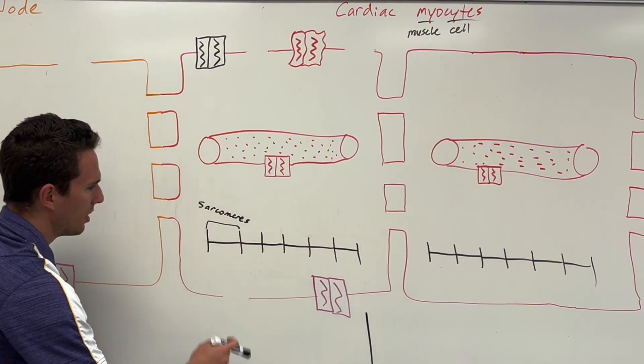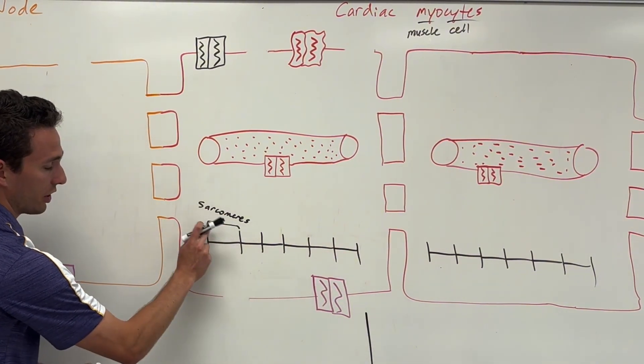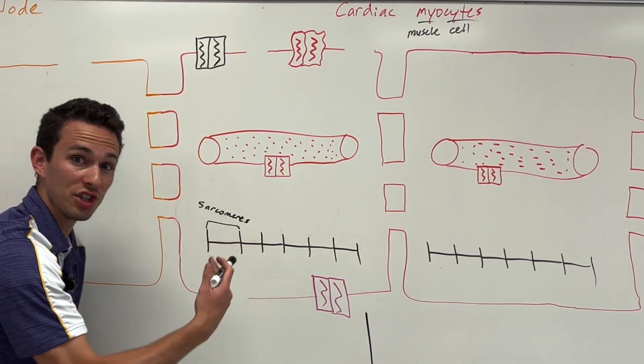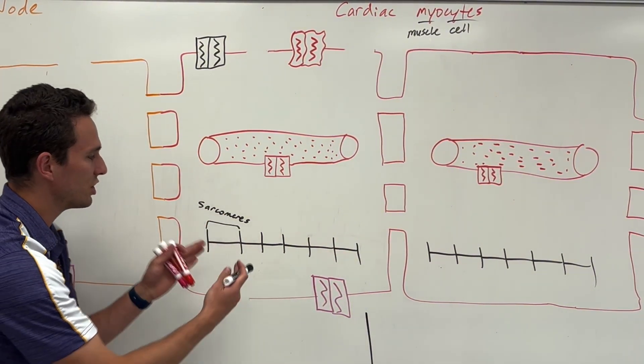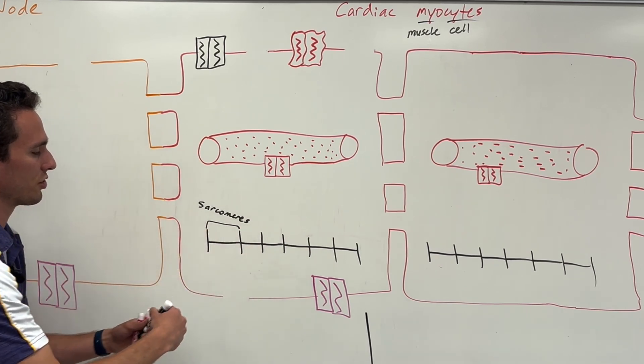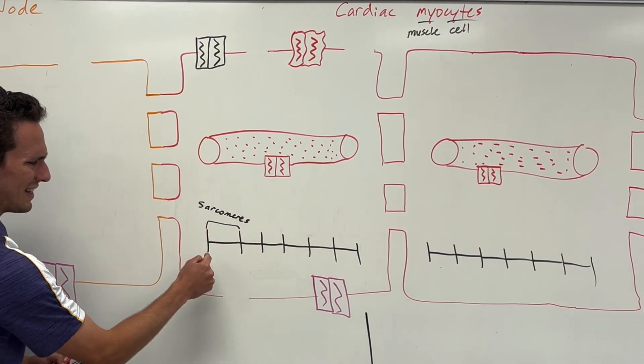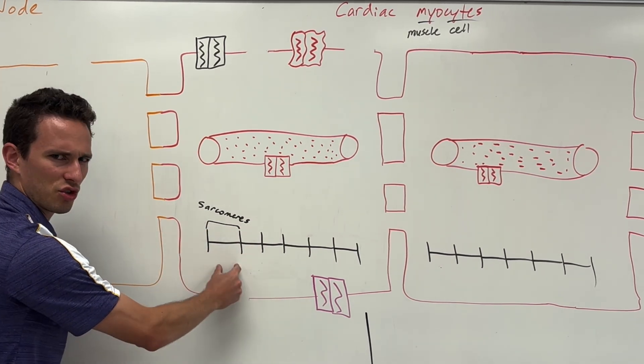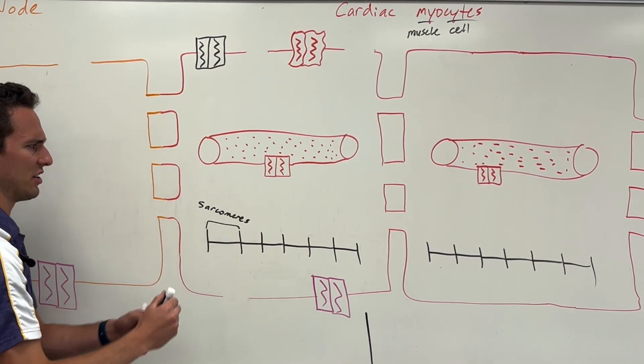We want these sarcomeres to basically shorten, to contract. Sarcomere literally means muscle unit, so it's the unit of your muscles. So how do we get these guys to contract so the heart can beat?